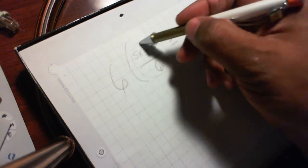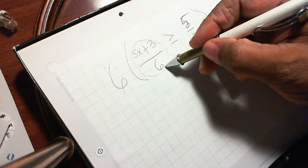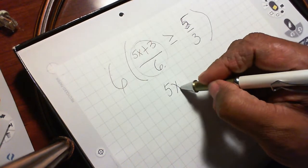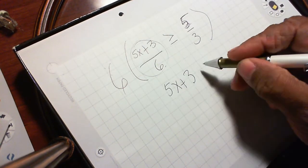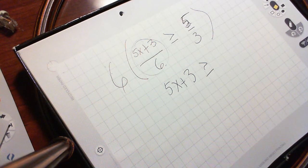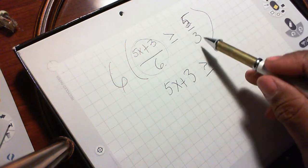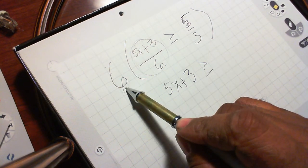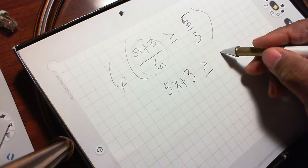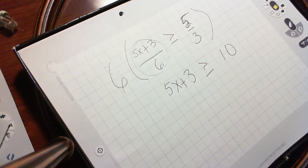So 6 times this first term, the 6 will cancel out, will give you 5x plus 3. It's greater than or equal to 6 times 5 over 3. 3 goes into 6 is 2. This is 2 times 5 is 10.